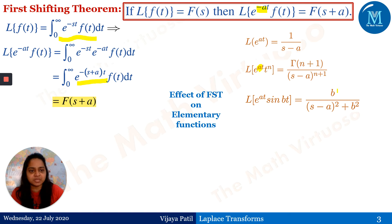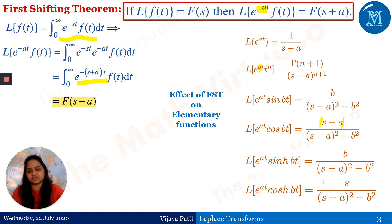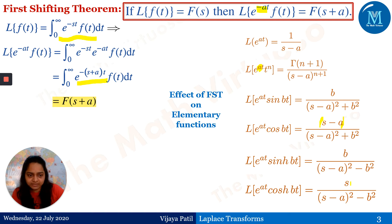Similarly, Laplace of e^(at)·sin(bt): since the Laplace of sin(bt) is b/(s²+b²), every s gets replaced as s-a, giving b/((s-a)²+b²). The same effect applies for cos(bt): s/((s-a)²+b²). For e^(at)·sinh(bt), it becomes b/((s-a)²-b²), and so on.